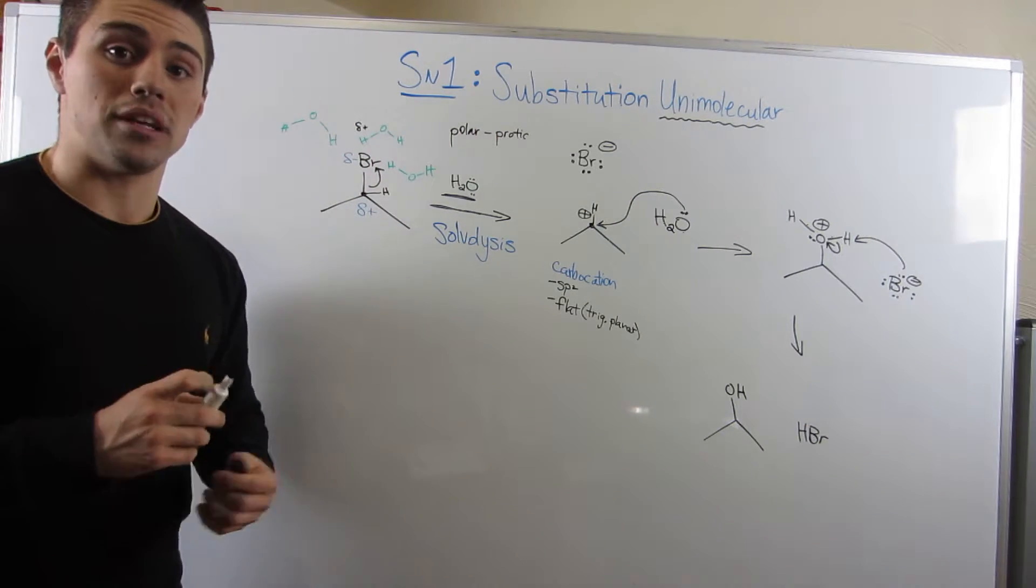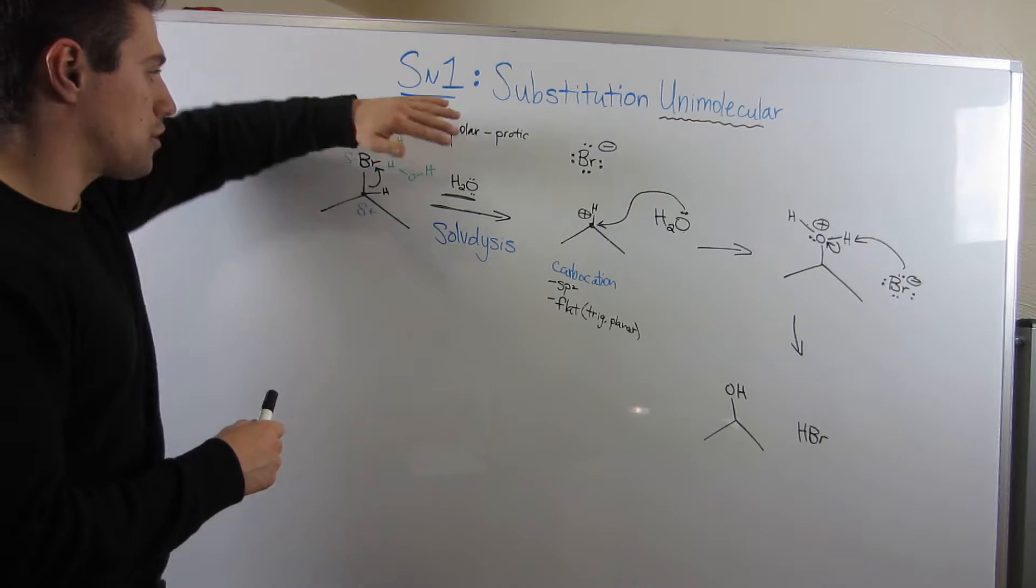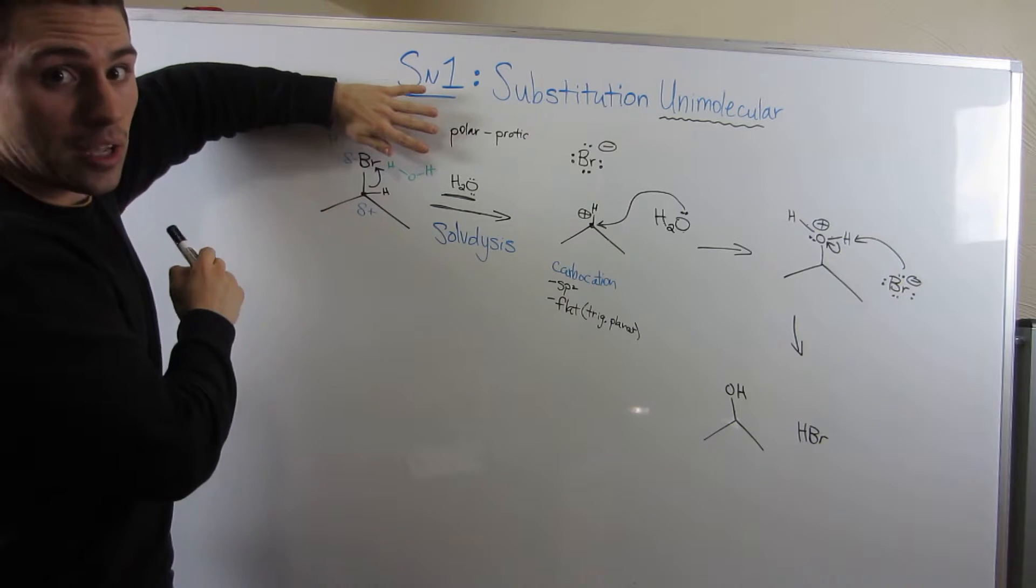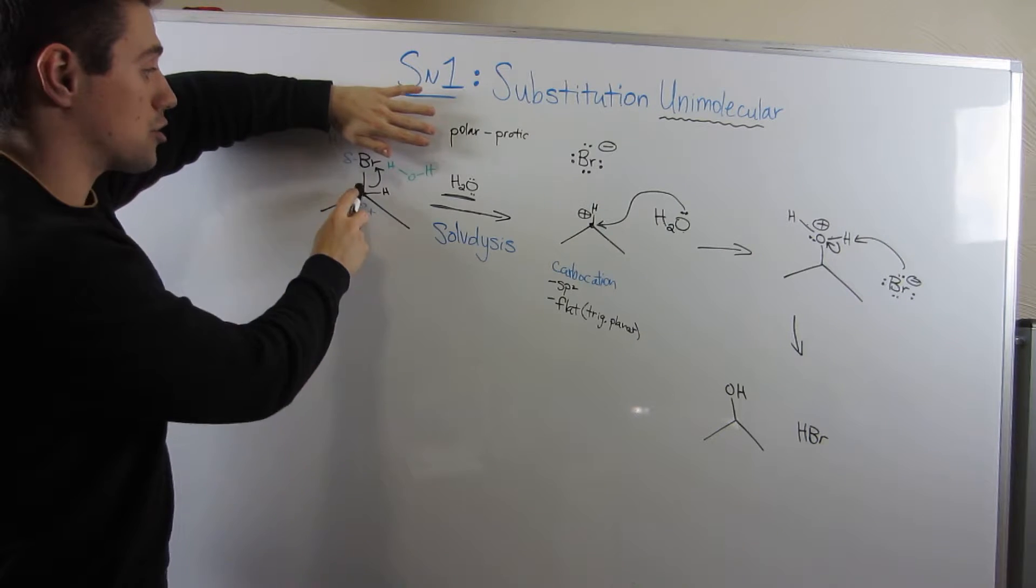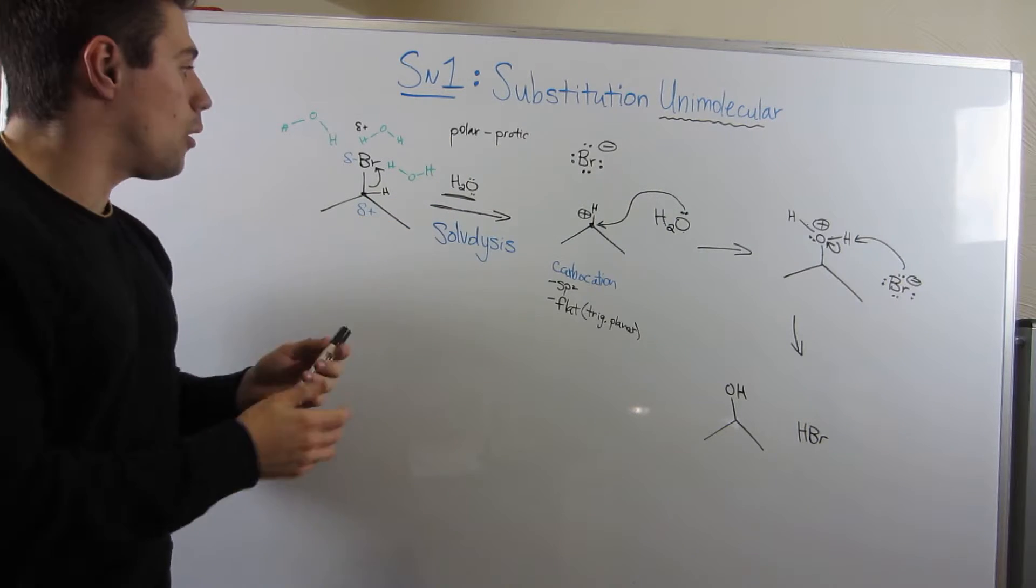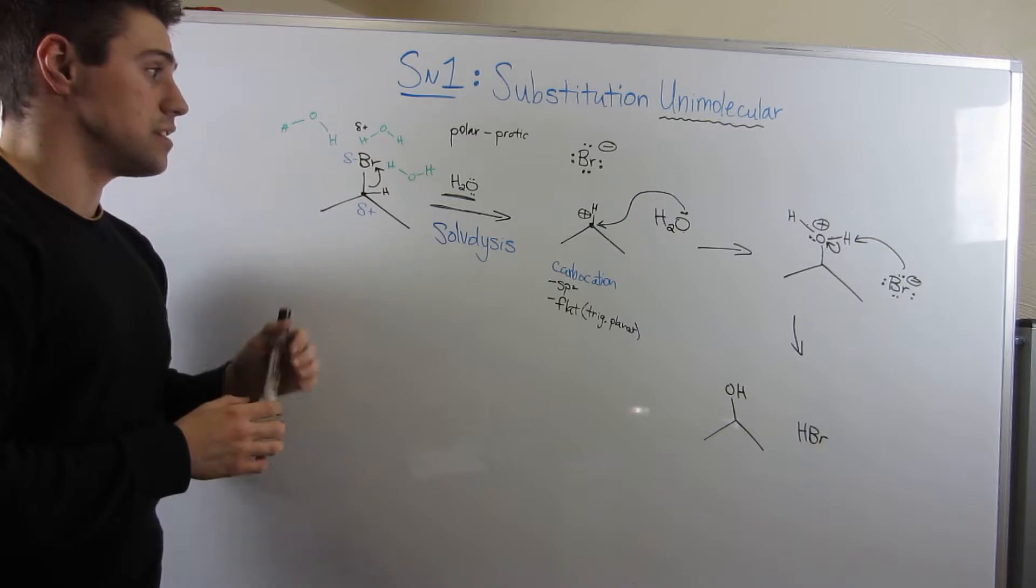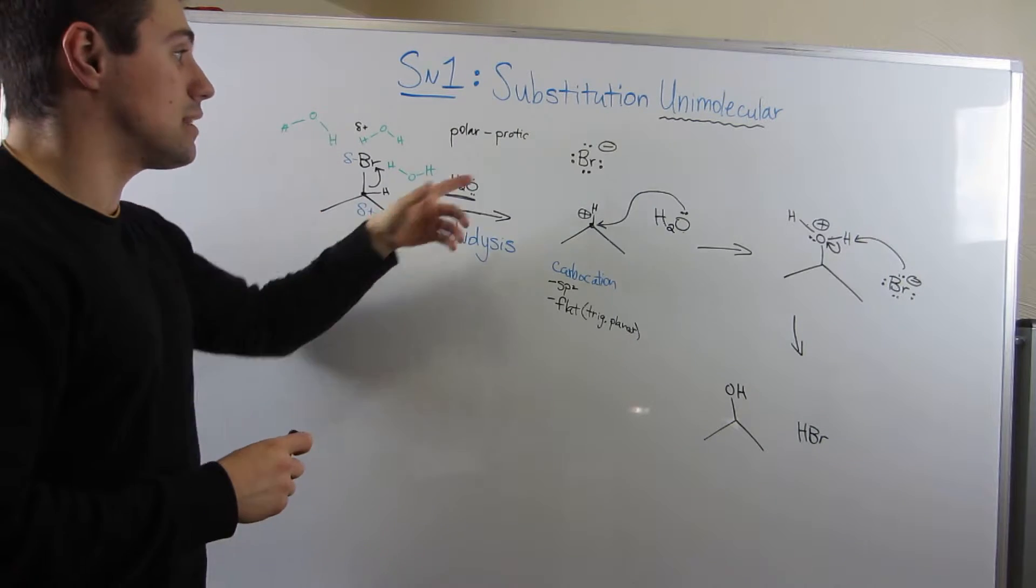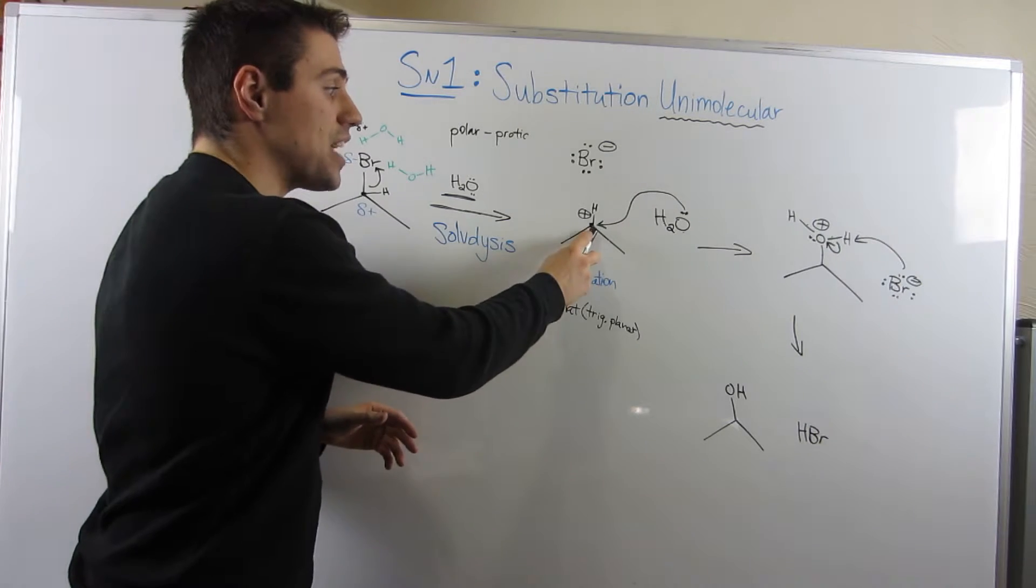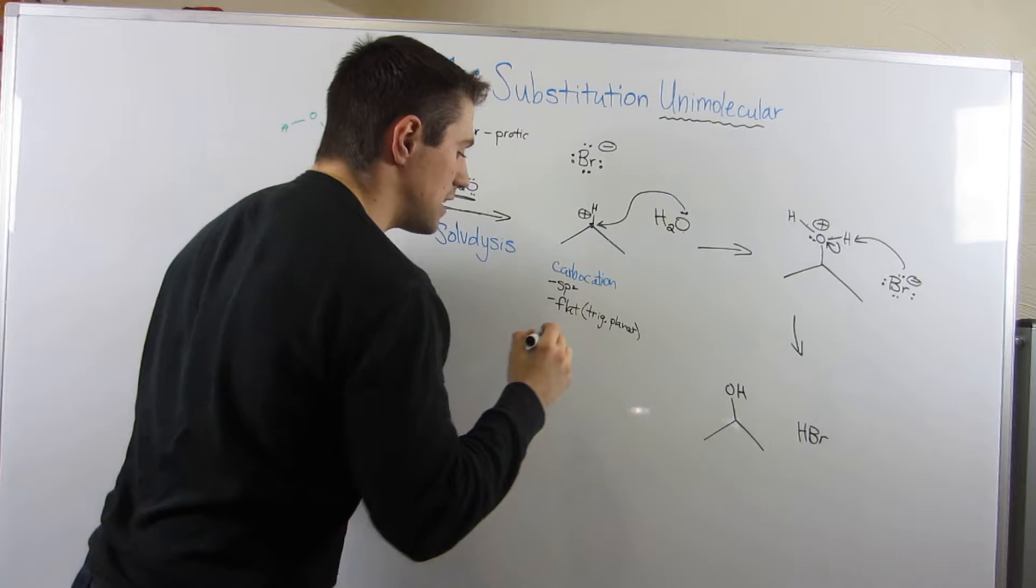We just performed an SN1 reaction, because here's what happened. We started off with this isopropyl bromide with a partial negative on the bromine and a partial positive on the carbon attached to it, our substrate carbon. Our polar protic solvent helped wean the bromine off, and through solvolysis, he left. After the bromine left and was Br minus on its own, we have this secondary, because this carbon is secondary, then we have this secondary carbocation.